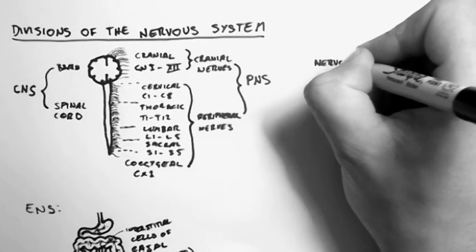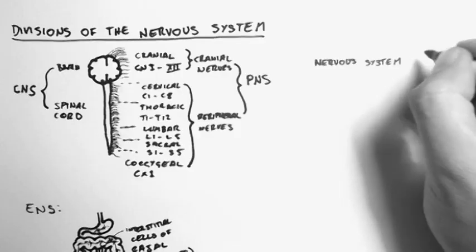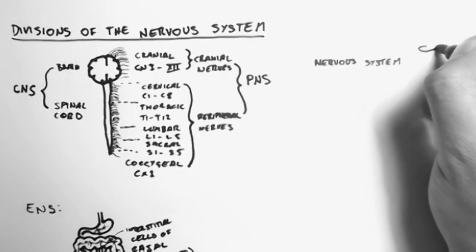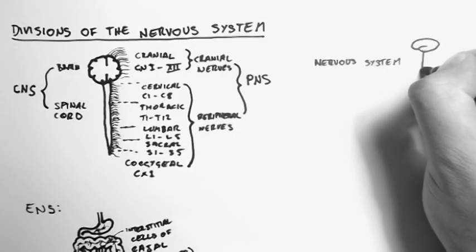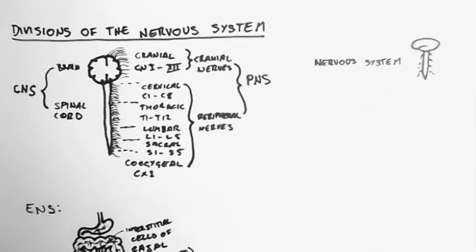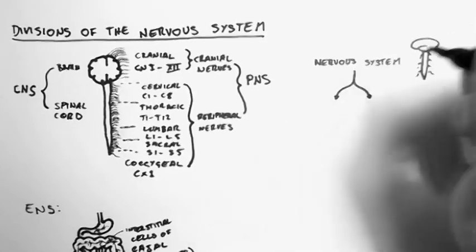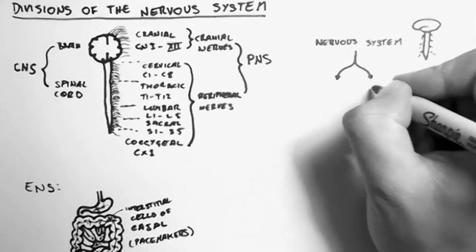Now let's have a look at the functional divisions of the nervous system. So, the nervous system comprises of the brain, the brain stem, the spinal cord, and all the nerves that come off it.